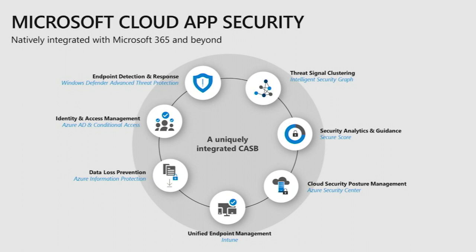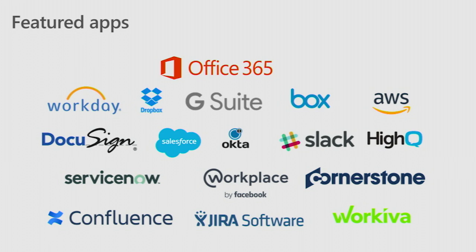Azure Information Protection is natively integrated to let you apply classification and protection of documents within your cloud applications. Azure AD and conditional access — I'll show you how we extend conditional access use cases using Cloud App Security. We also have integration with Windows Defender ATP to collect all shadow IT information — SaaS applications used by users within the corporate network, but also outside. And of course, we support Office 365 plus many other SaaS applications, including all the leading ones.